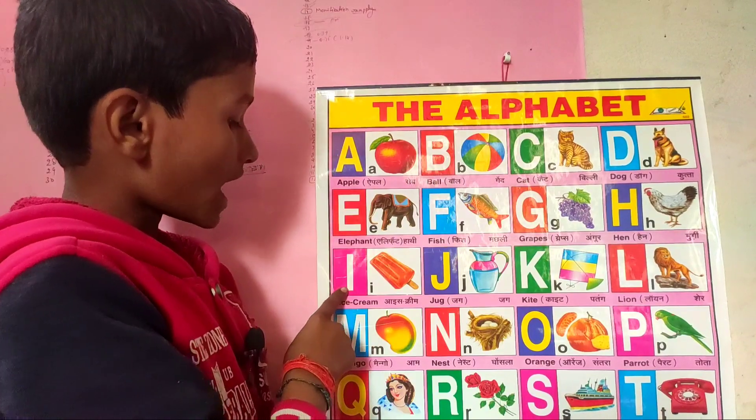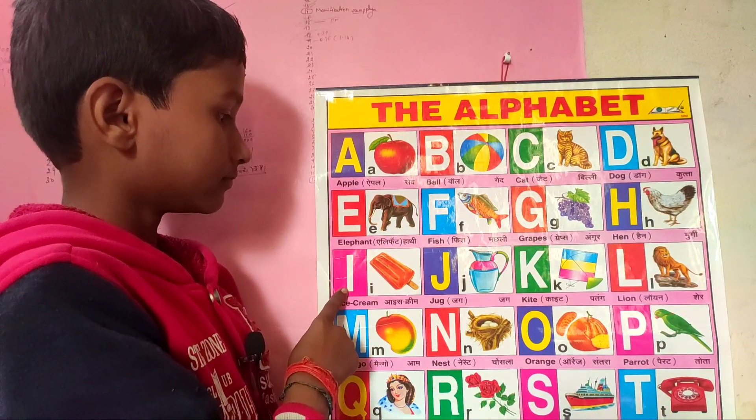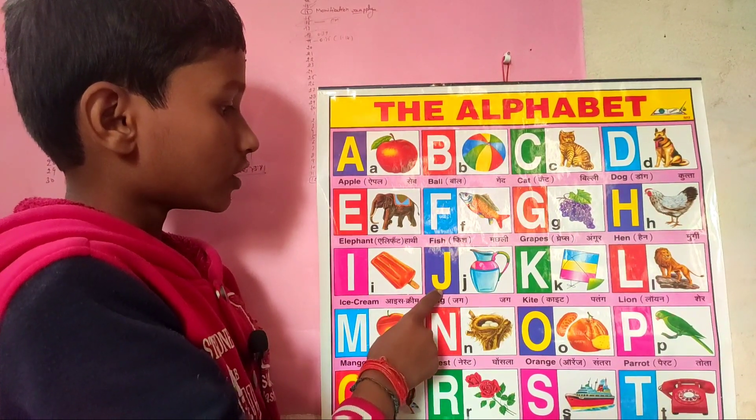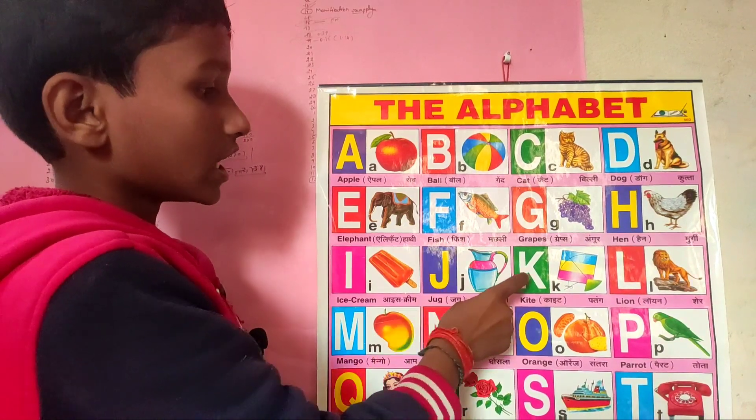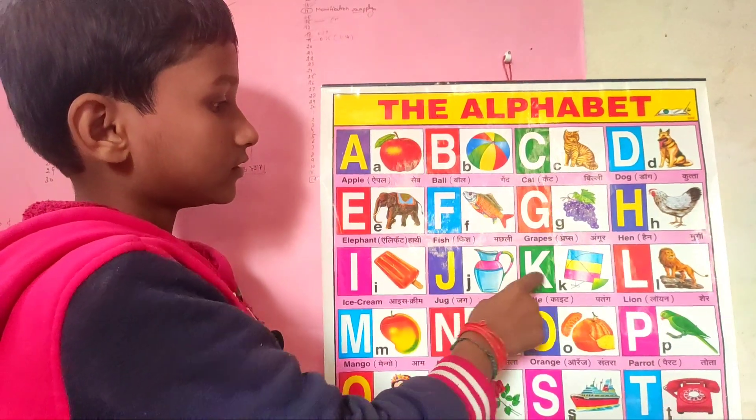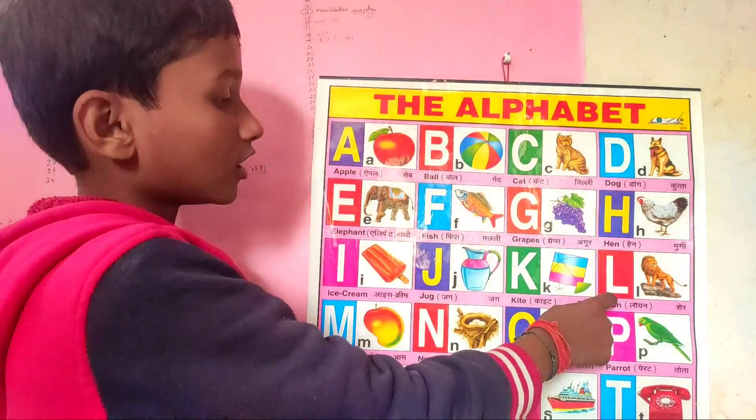I for ice cream, J for jug, K for kite, L for lion.